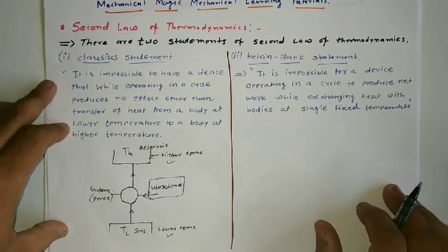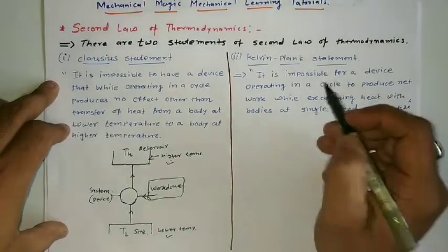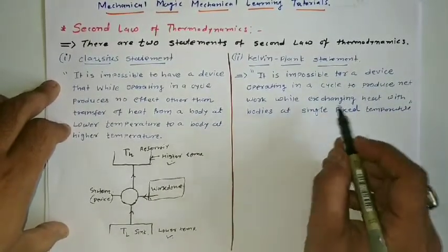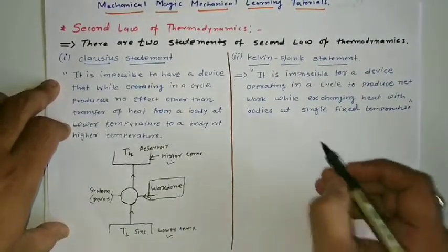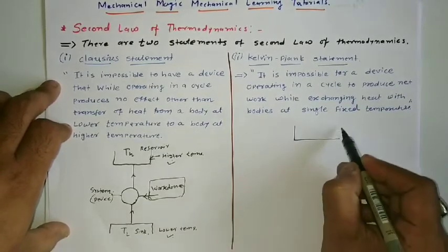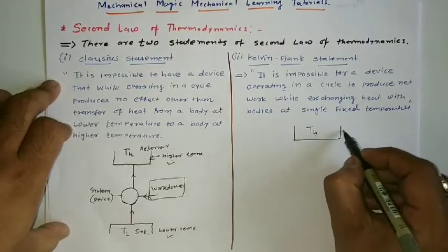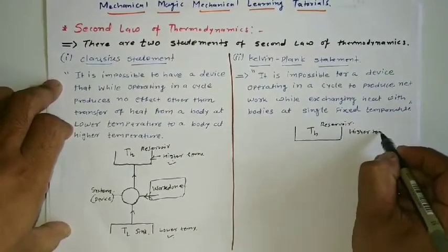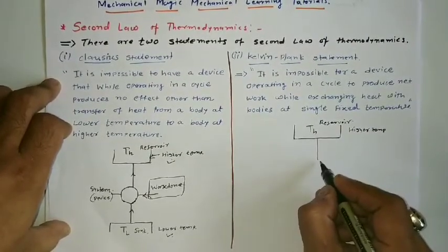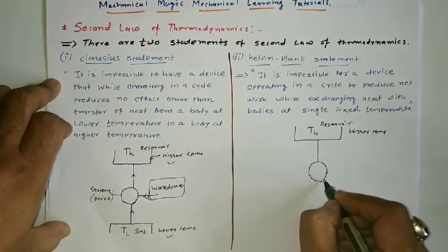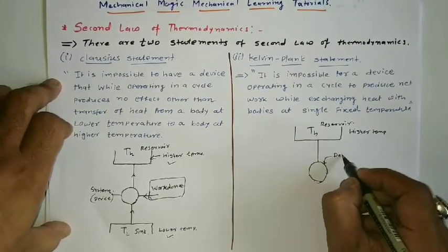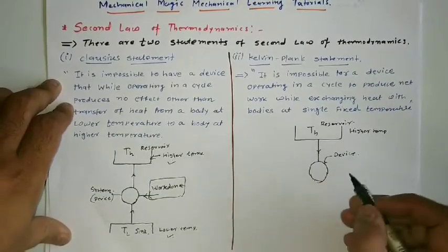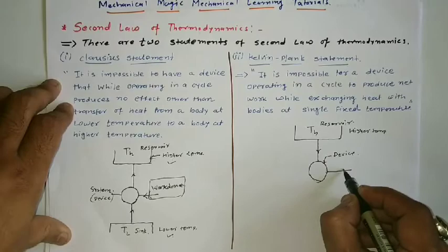For the second statement, the Kelvin-Planck statement: it is impossible for a device operating in a cycle to produce net work while exchanging heat with bodies at a single temperature. Here the reservoir is at higher temperature, and there is a device or system. Heat is taken by the device from the reservoir and that is converted into some work done.